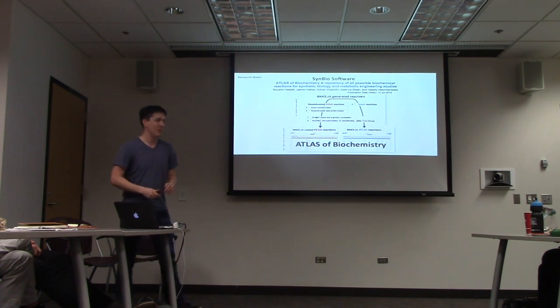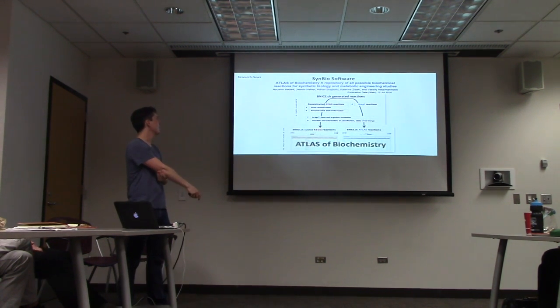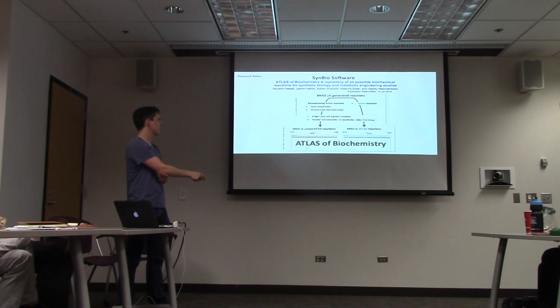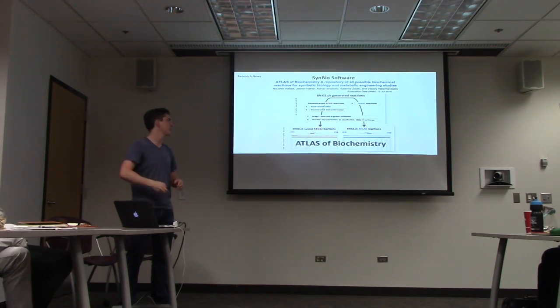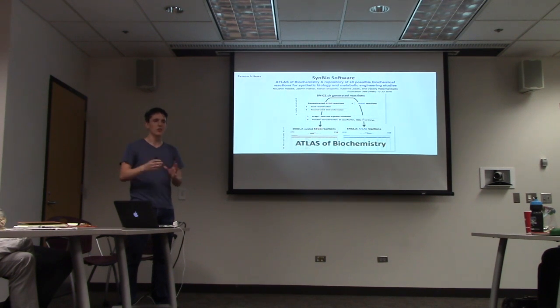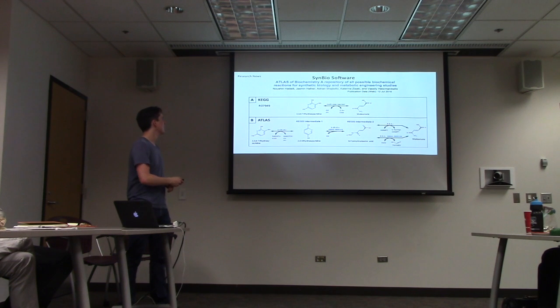And then finally, sort of just on the Symbio software part front, this sort of atlas of biochemistry was developed. So this is basically a map of all sort of known metabolites and all known enzymes that catalyze the generation of those small molecule metabolites. And then also all possible novel sort of using those enzymes, what possible small molecule metabolites could you build. And so that could be very useful if you're trying to like engineer a metabolic pathway.